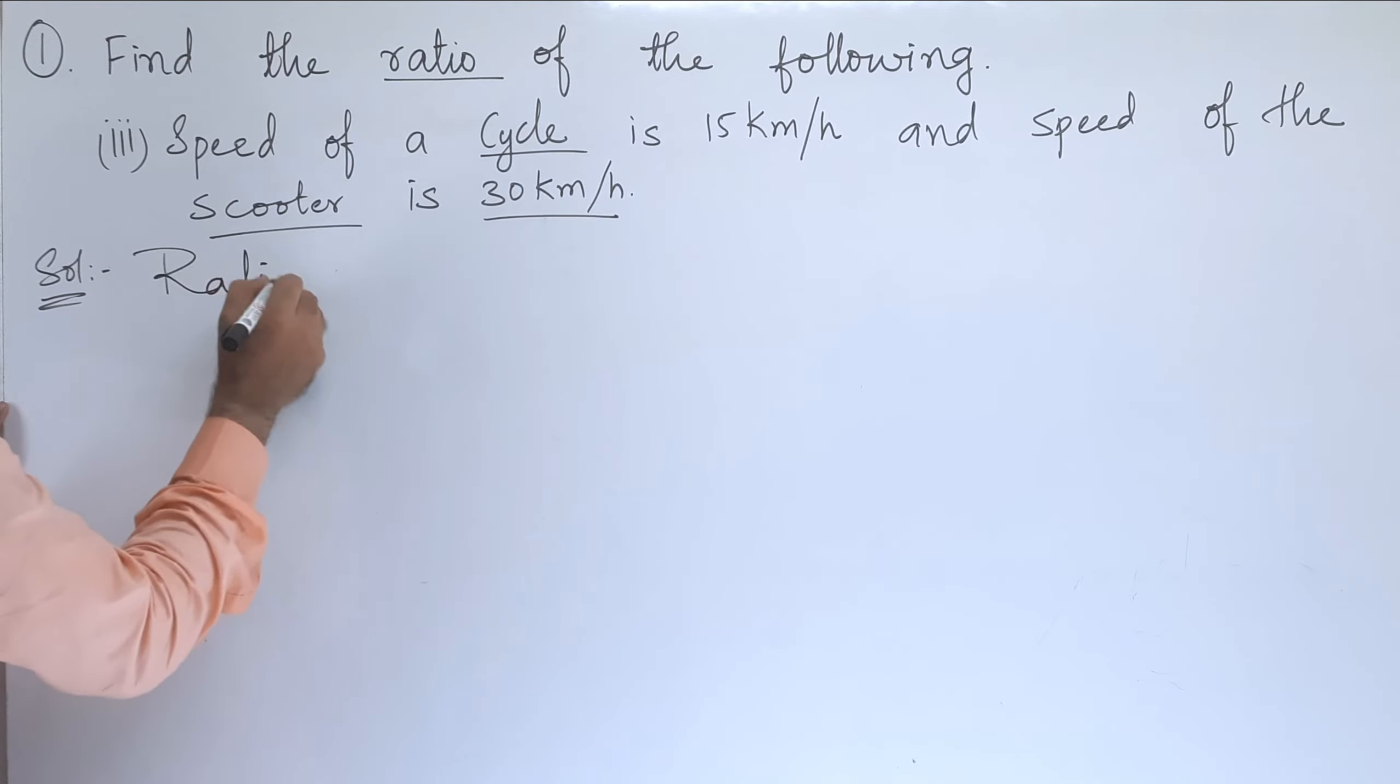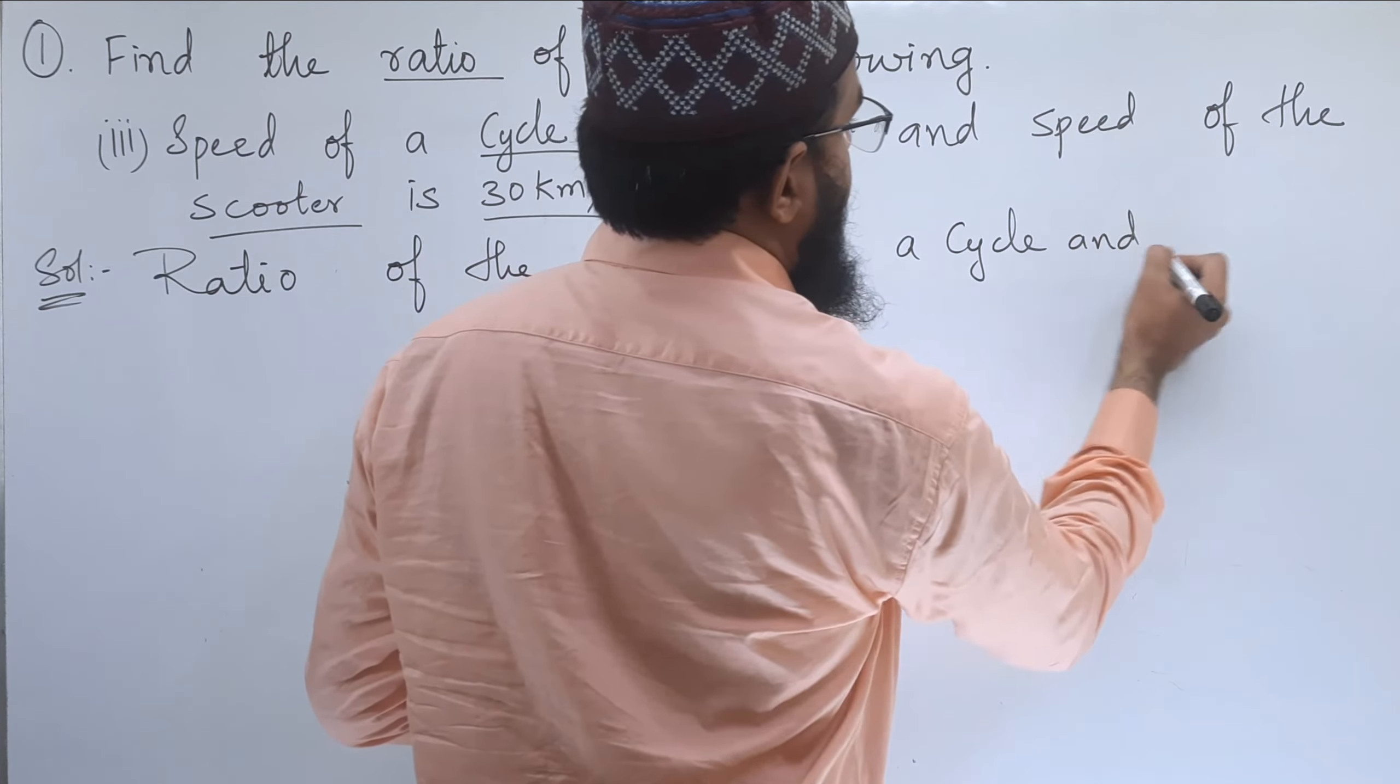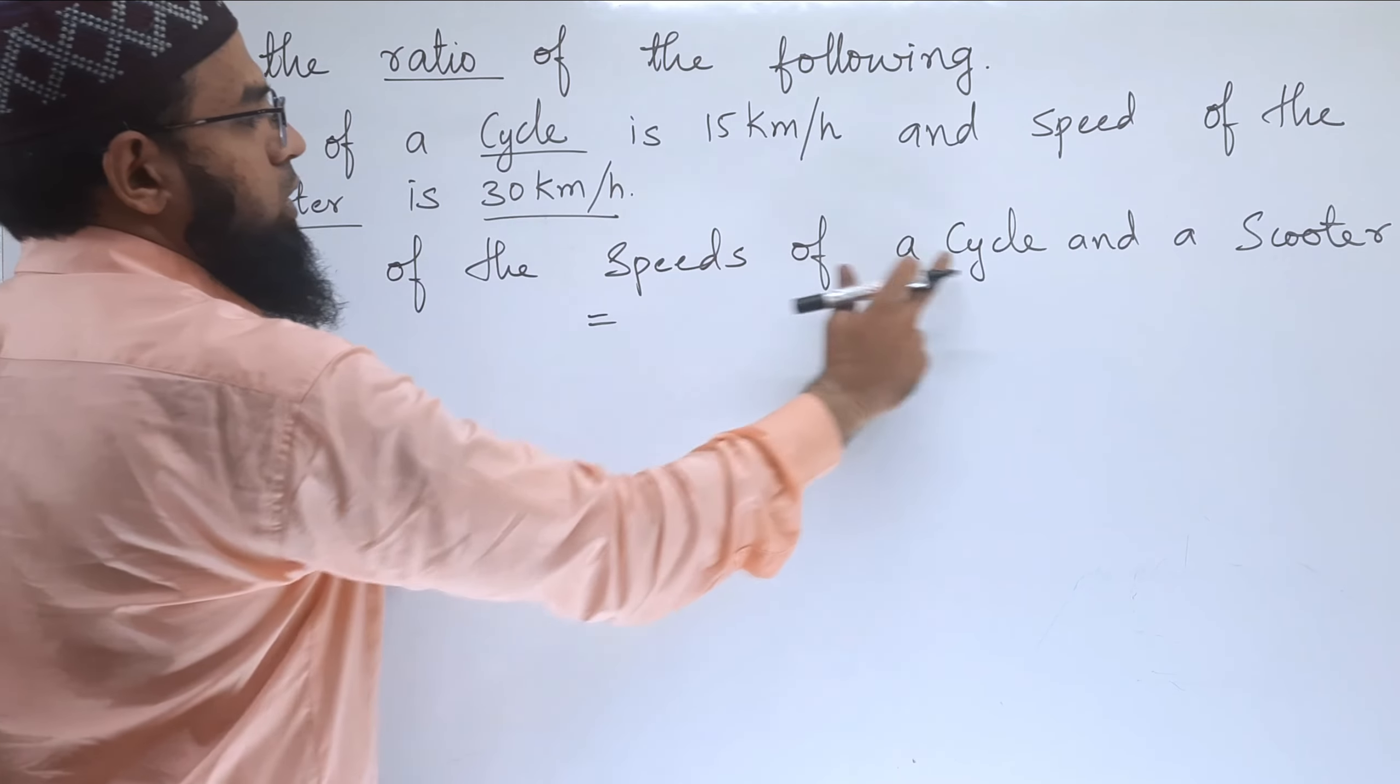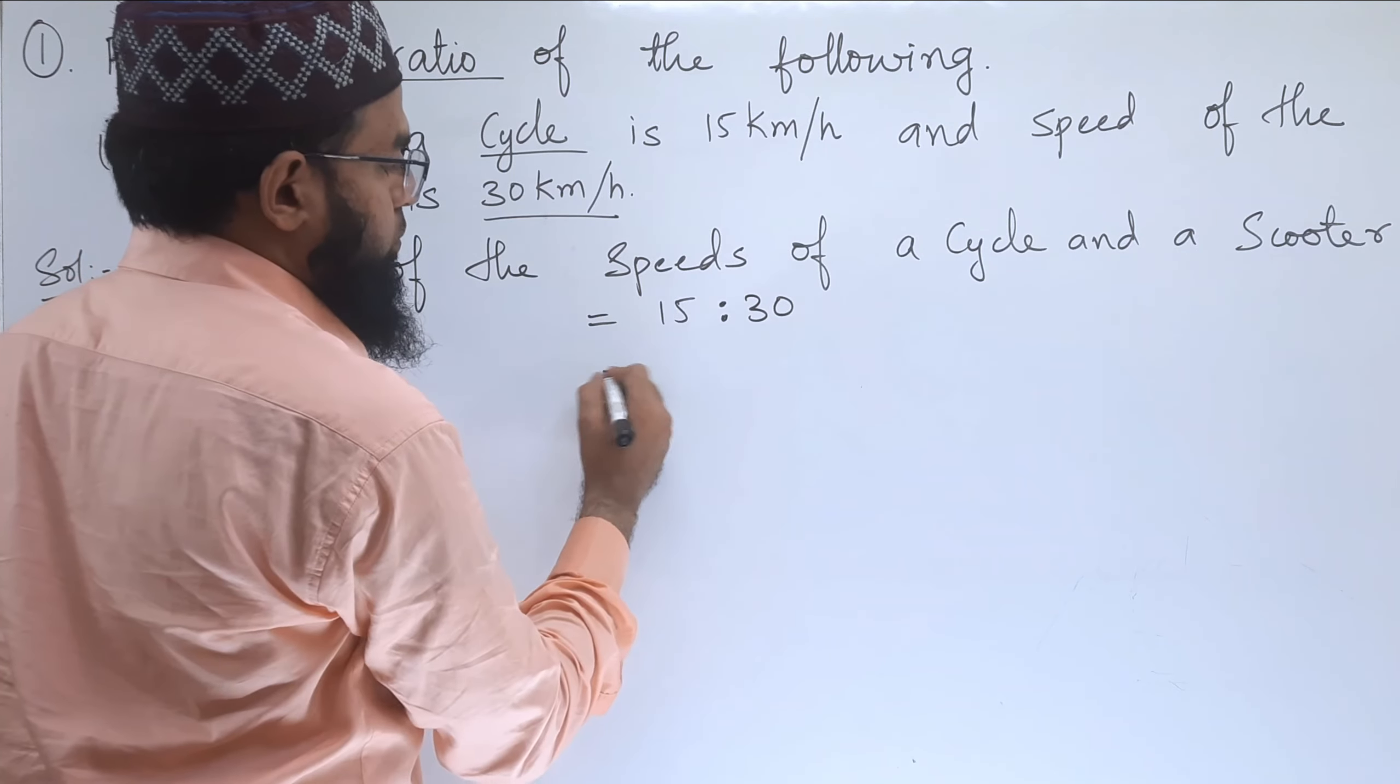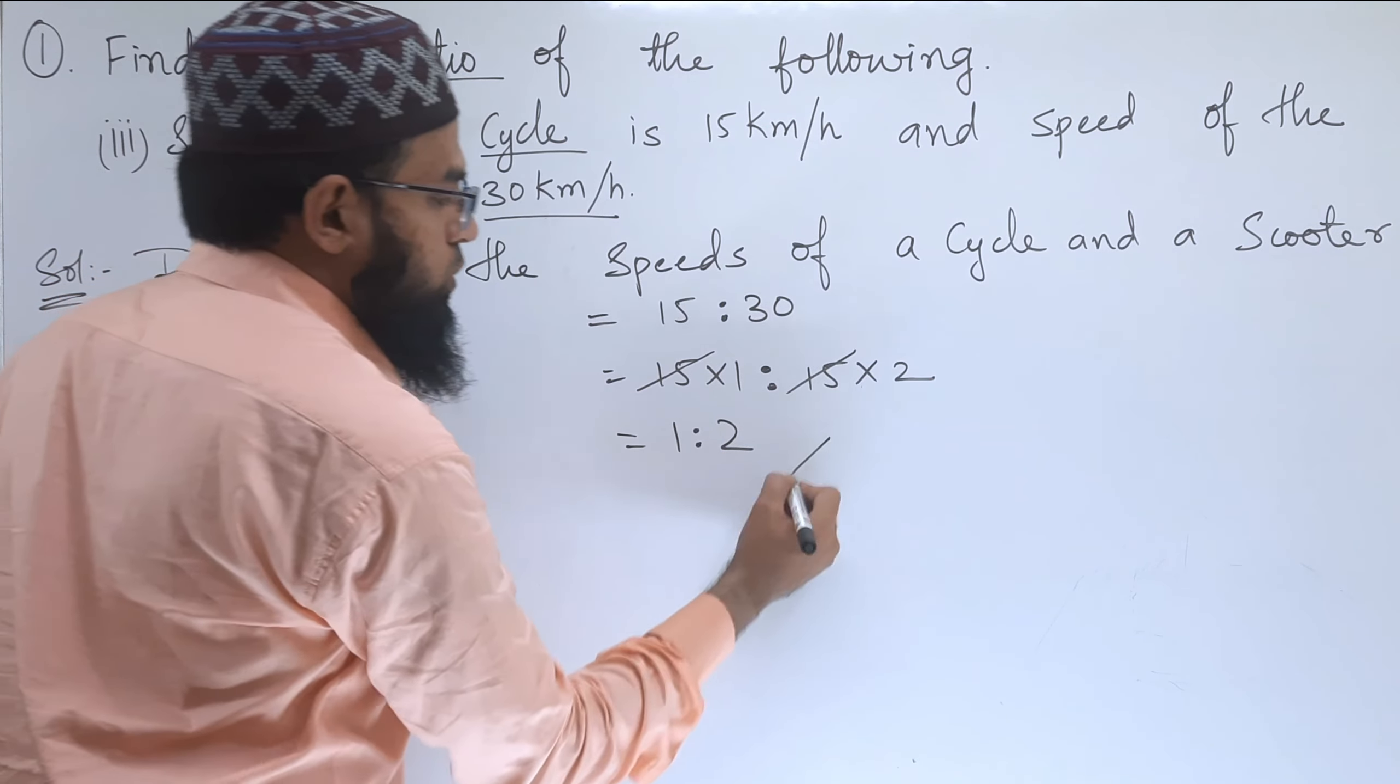So let us write, ratio of the speeds of a cycle and a scooter is equal to, for cycle the value is 15 km per hour and for scooter is 30. So 15 ones are 15, 15 twos are 30. So we can cancel 15, 15. The ratio is 1 is to 2.